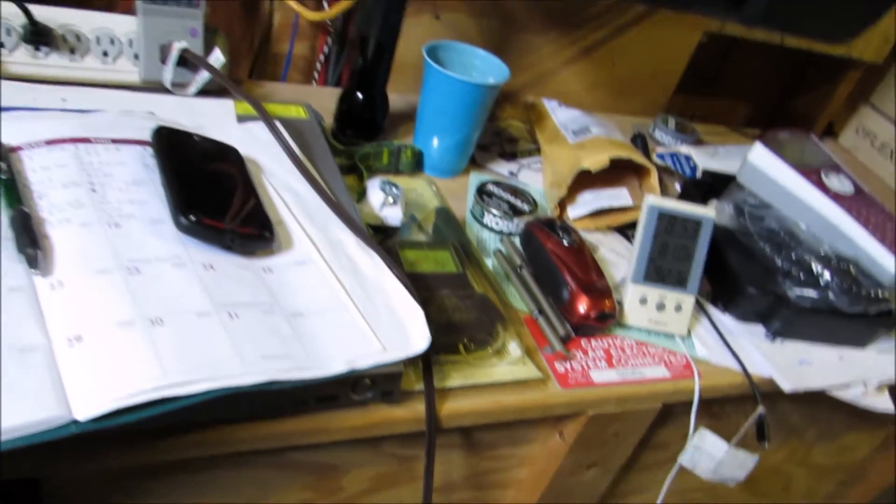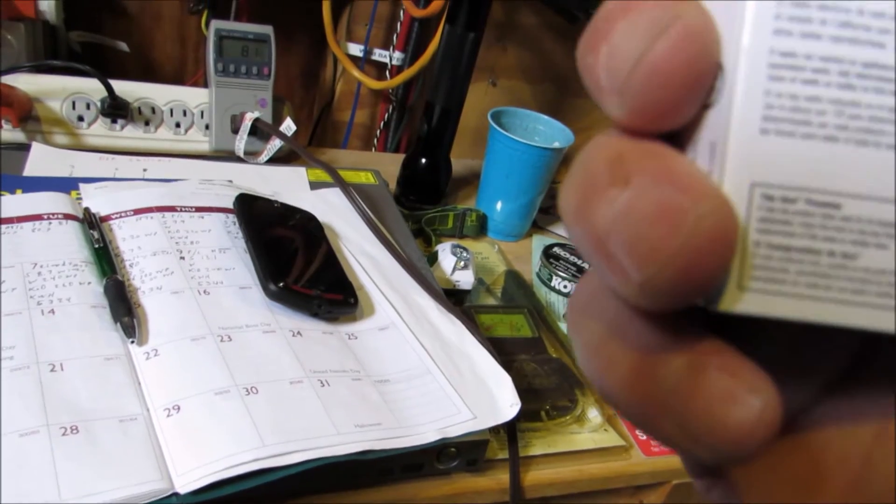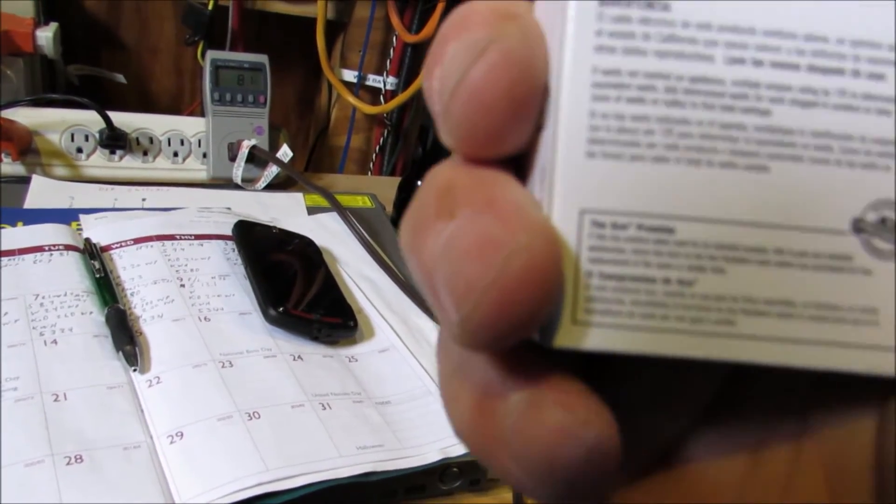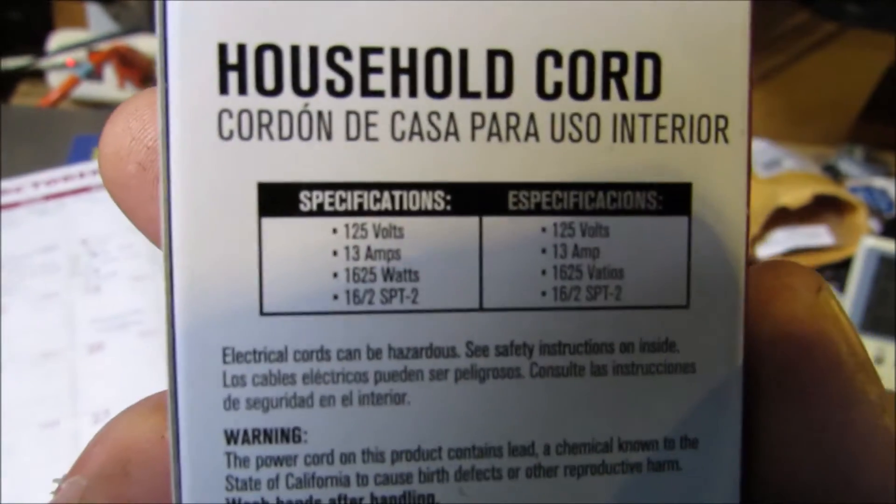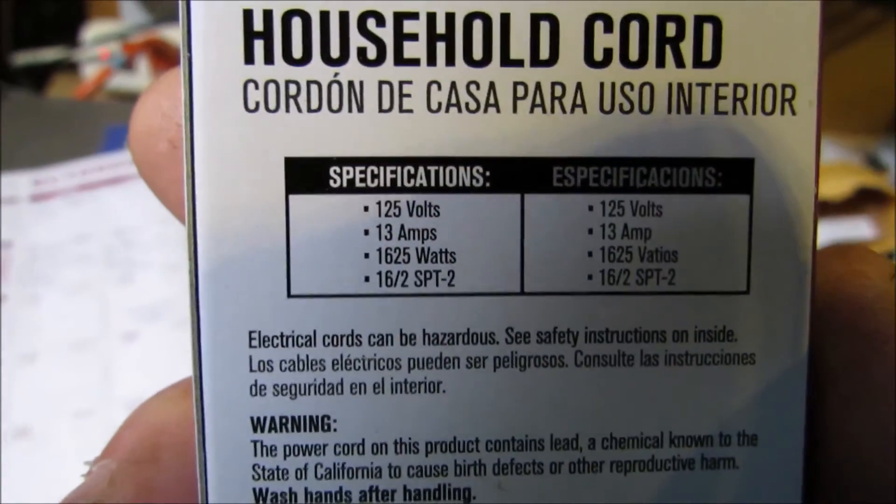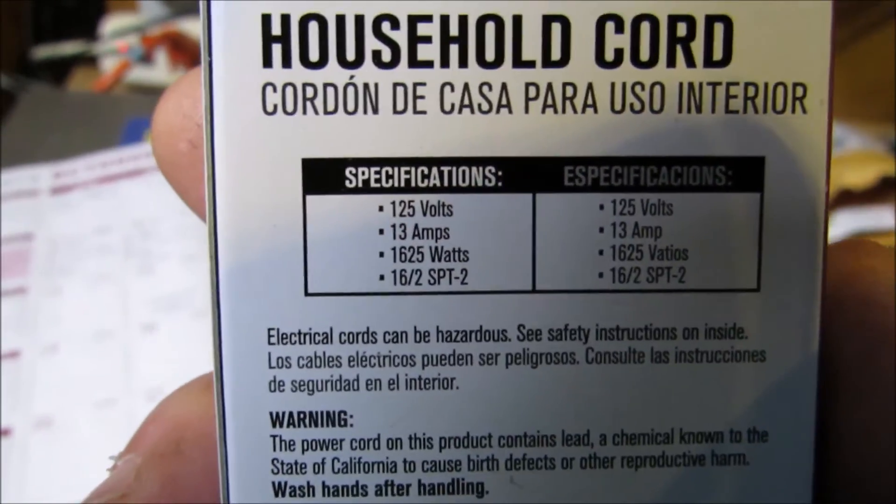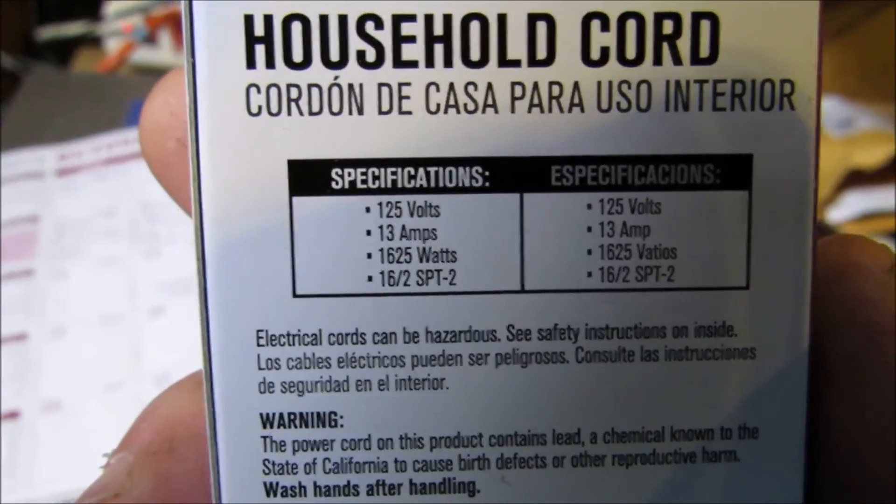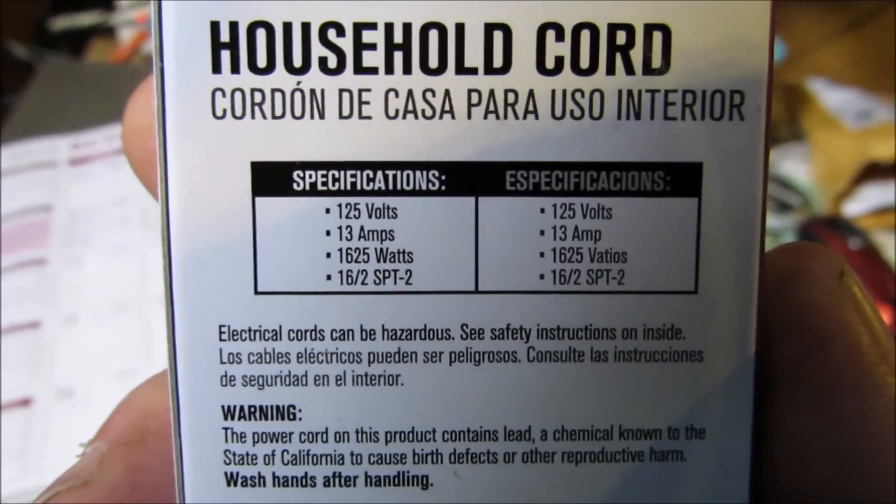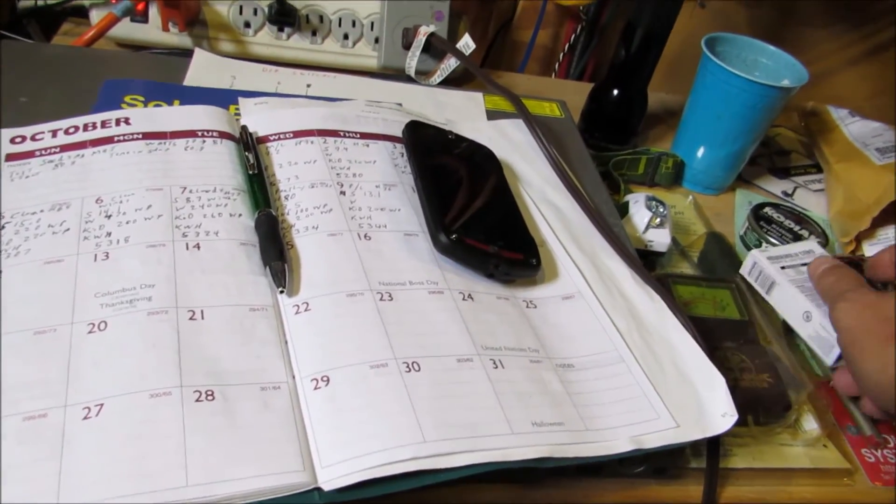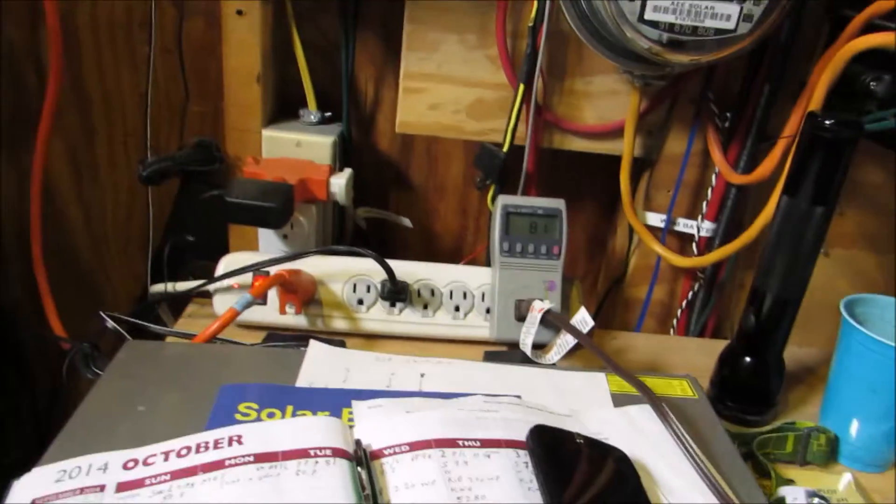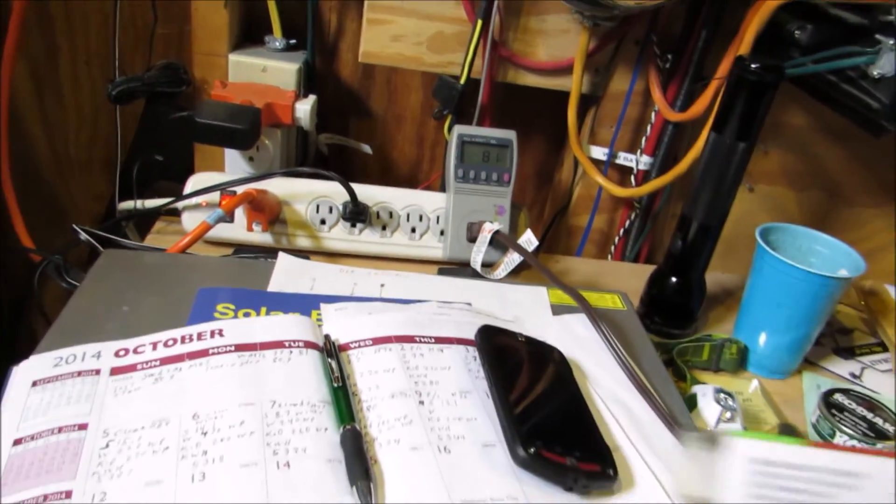That's what it says on the package. It says specifications: household cord, good for 125 volts, 13 amps, at 1625 watts. So that's cool, I'm more than safe. And it's UL listed - everything I have is UL listed.